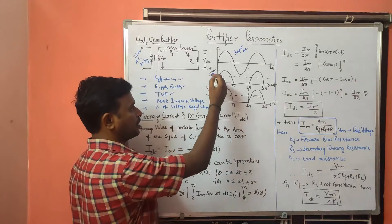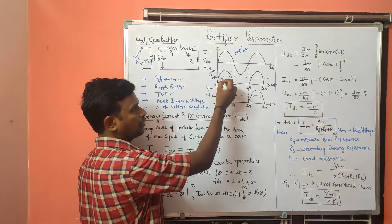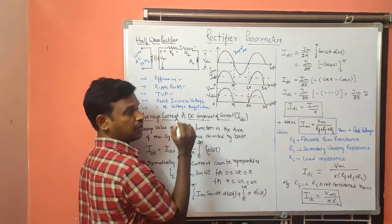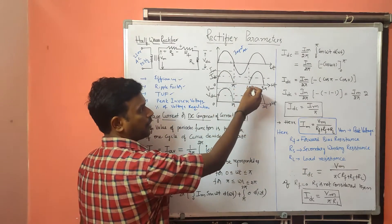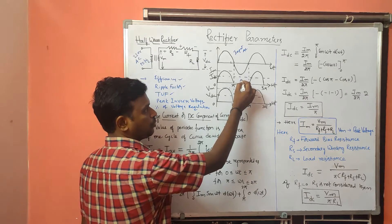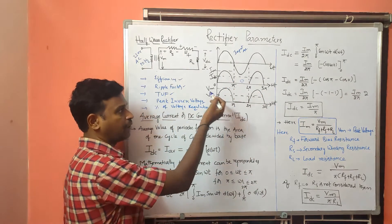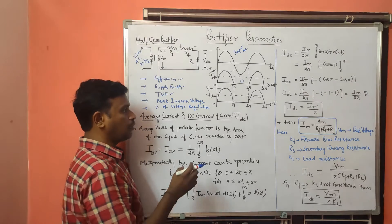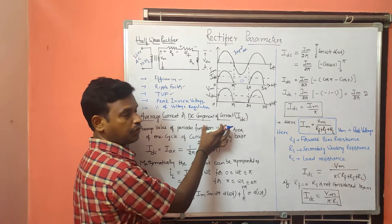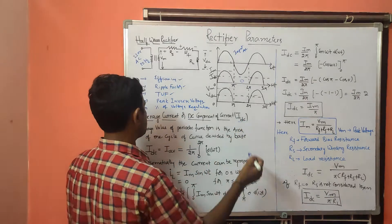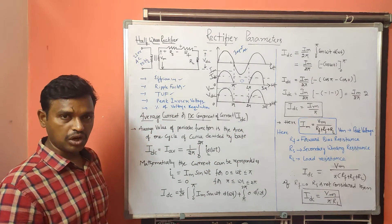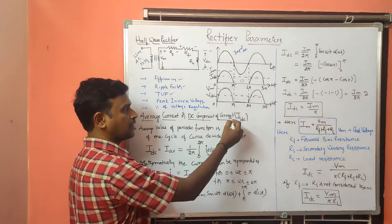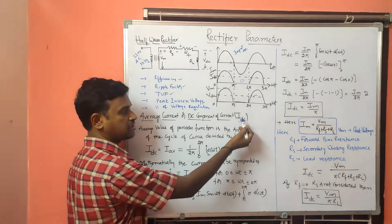IM is the maximum or peak current, and we have IDC. From 0 to π we have the output waveform, and from π to 2π we have no output — it is zero. The voltage waveform is represented similarly. Now I am going to derive the equation for IDC.